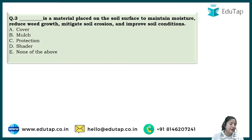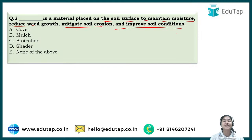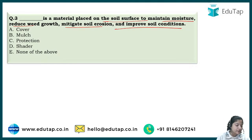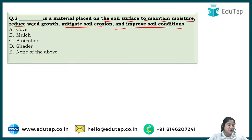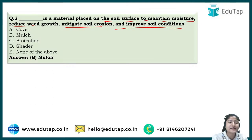Question number three: 'Dash is a material placed on the soil surface to maintain moisture, reduce weed growth, mitigate soil erosion, and improve soil conditions.' You have to tell me the name of this material. Arun says mulch, Purnima also says mulch — and yes, the answer is mulch.